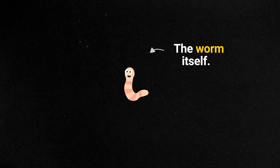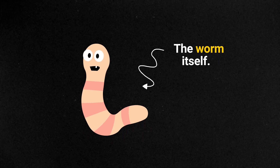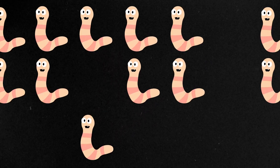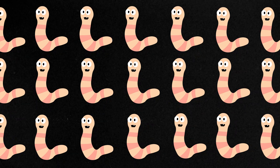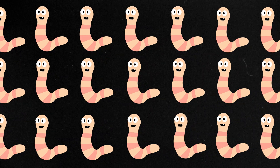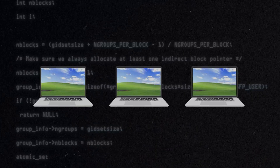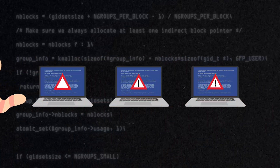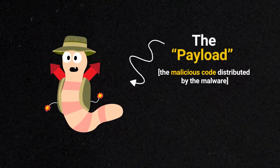Stuxnet consisted of three parts. One part was the worm itself. A computer worm is a type of malware that self-replicates, but you can design a worm with code that allows it to do much more than just self-replicate. Malicious code can actually be used to modify the systems the worm passes through, and that malicious code is referred to as a payload.